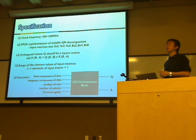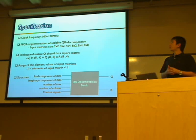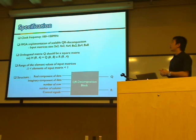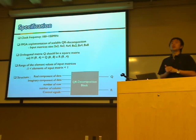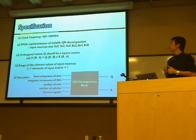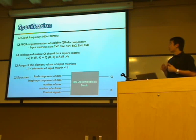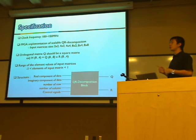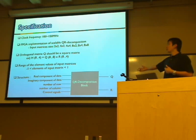Here are our specifications. Our target clock frequency is 100 to 150 megahertz, and our input matrix size is scalable from 2×2 to 8×8. After decomposition, the Q matrix should be a square matrix, and the elements of our input matrix are limited from -1 to 1. The system has five inputs and two outputs.